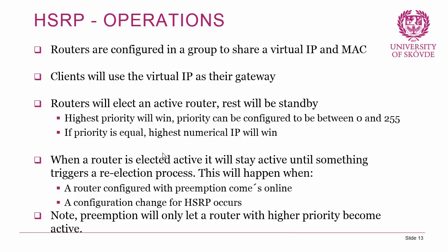A re-election occurs when an HSRP configuration change happens, or when a router configured with preemption comes online. Preemption triggers a re-election when that router comes online, but preemption will only allow a router with a higher priority to become active — if a preempting router has the same priority as the current active, it will remain in standby.